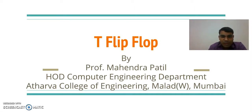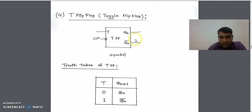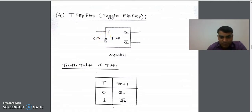T flip-flop is also called as toggle flip-flop. The symbol that we use to represent the T flip-flop takes one input T and there are two outputs QN and QNB. This input is called as clock input, and the bubble indicates it is a negative edge trigger flip-flop. If there is no bubble, it is called as positive edge trigger flip-flop.